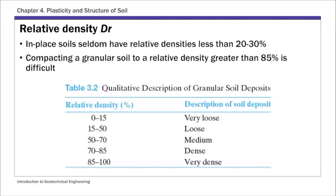In practice, natural in-situ soils seldom have relative density less than 20 to 30 percent. Compacting granular soil to relative density higher than 85 percent is very difficult and requires substantial energy. Table 3.2 lists qualitative descriptions: 0–15% is very loose, 15–50% is loose, and 85–100% is very dense. We will now work through a quick example calculation involving relative density.